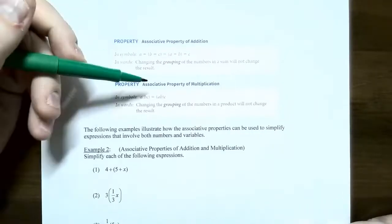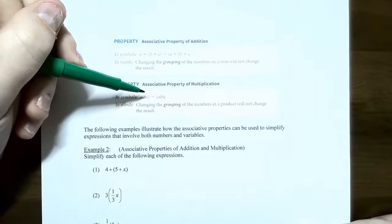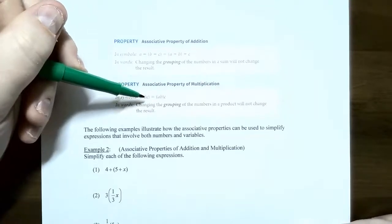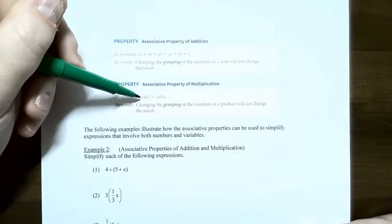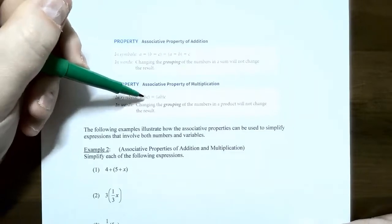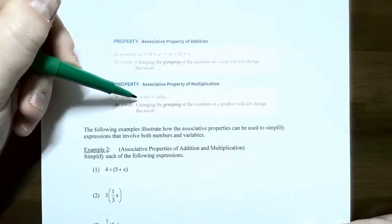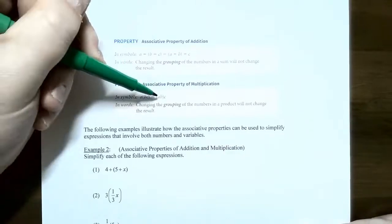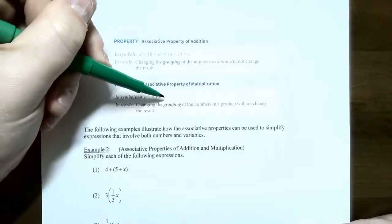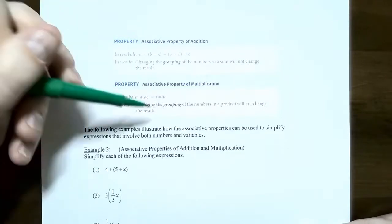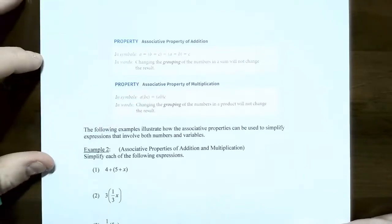The associative property for multiplication says if you have a outside the grouping and b times c inside, you can rearrange the grouping because you're just multiplying. It's a times b times c — you're multiplying all three real numbers together. You can multiply a times b first in that group, then multiply by c last. Changing the grouping of numbers in a product will not change your answer either.